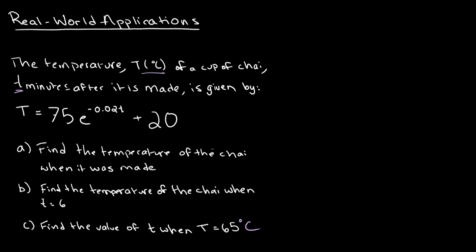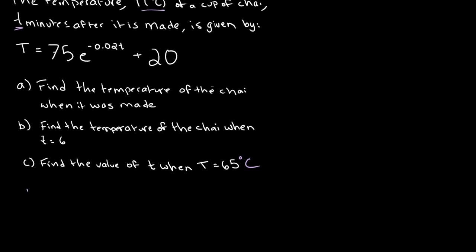So let's start with part A, which asks us to find the temperature of the chai when it was made. So when the chai was made, or right after the chai was made, T is equal to zero because zero minutes have passed so far. Therefore, if we want to calculate the temperature...